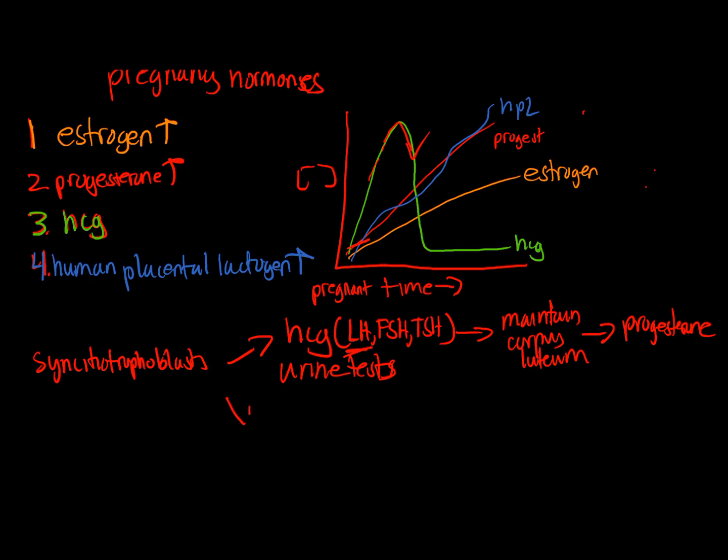Finally, we have human placental lactogen, also made by the syncytiotrophoblast. And the function of this is, first, it increases, stimulates insulin production. But more importantly, I'm going to make it bigger, because it increases insulin resistance.